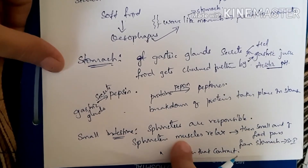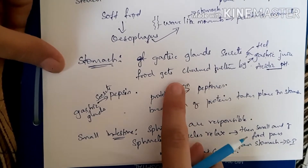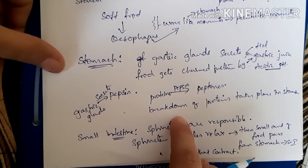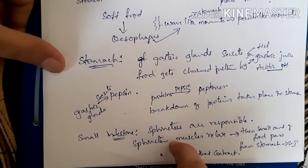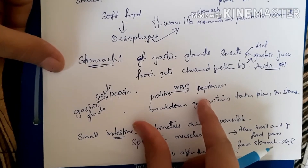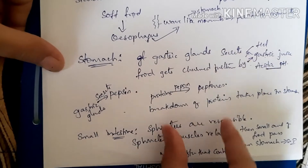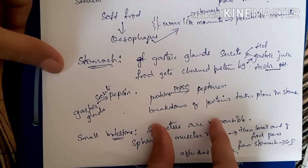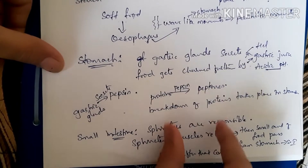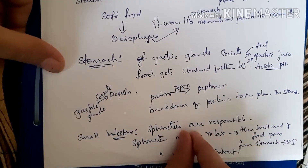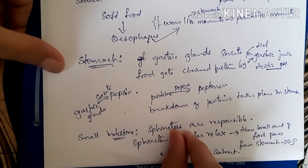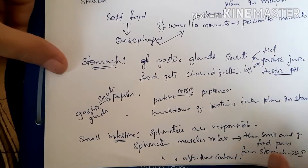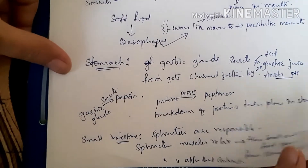When the sphincter muscles relax, a small amount of food passes from the stomach to the intestine; then they contract, then relax again. This contraction and relaxation of sphincter muscles is carried out continuously and is regulated by nerves.